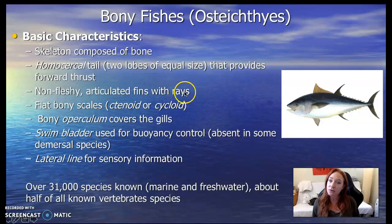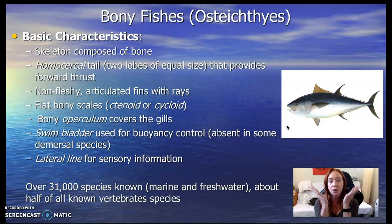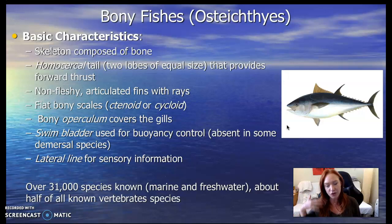They have flat bony scales — called ctenoid or cycloid scales. They have a structure called an operculum, which is a door over their gills, so their gills aren't open directly to the water. Besides protecting the delicate gill structure, the operculum is hinged, so when the fish opens and closes its mouth, it also flaps the operculum open and closed, helping pull fresh water over their gills.